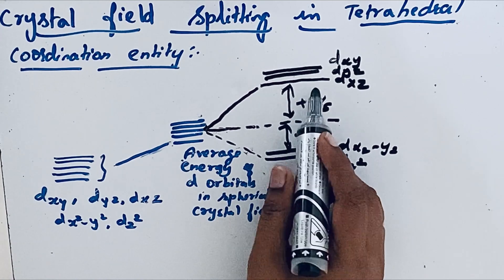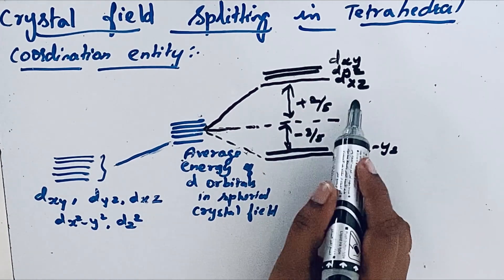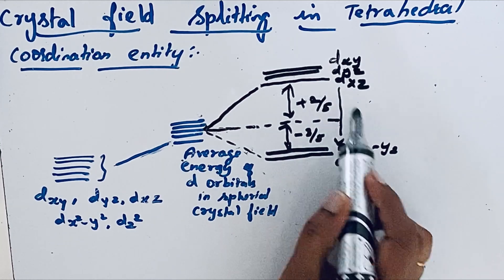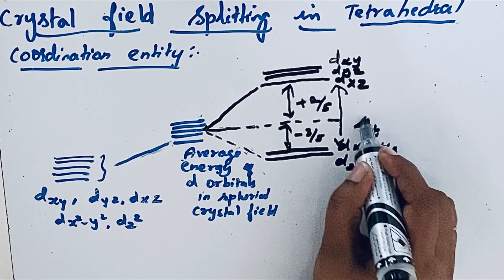So this splitting we called as crystal field splitting, that is represented as delta t for tetrahedral coordination entity.